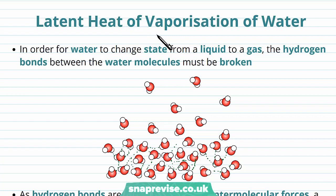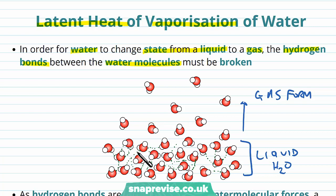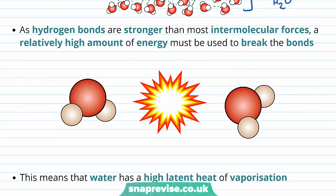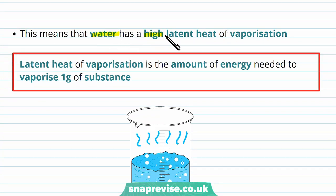As well as specific heat capacity, we need to be familiar with the term latent heat of vaporization. For water to change from a liquid to a gas, we have to break hydrogen bonds between the water molecules. In the gas form, the hydrogen bonds barely exist. Because hydrogen bonds are much stronger than most other types of intermolecular forces, a relatively high amount of energy must be used to break them. The energy used to pull these water molecules apart is provided as heat energy, and the amount needed is much more relative to other types of molecule. We describe this as water having a high latent heat of vaporization.